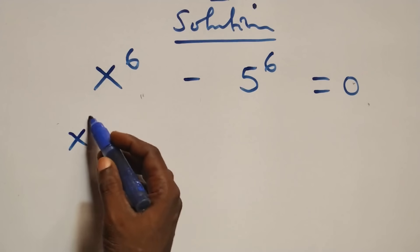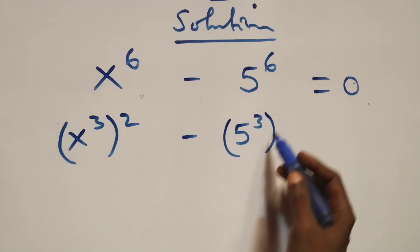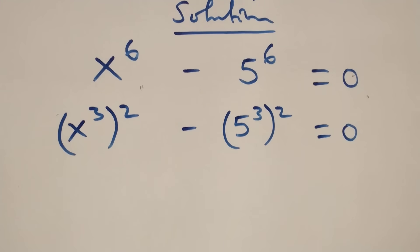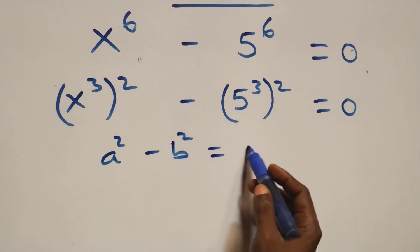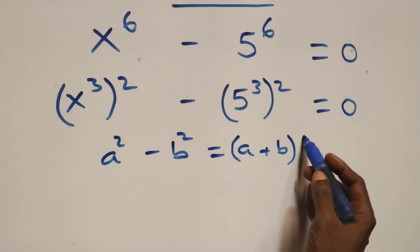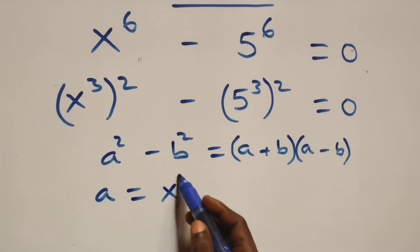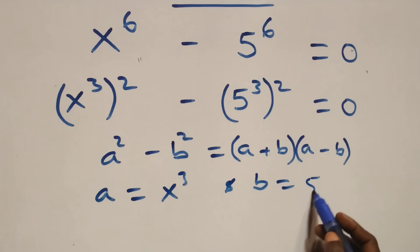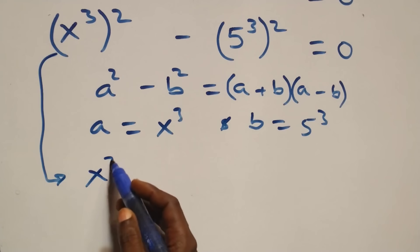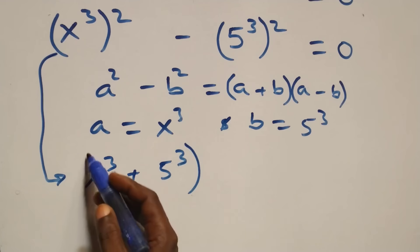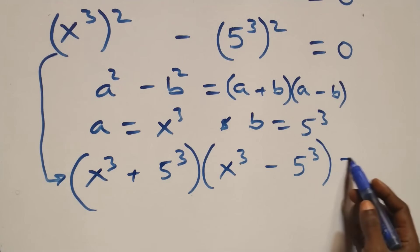We can write this as x raised to the power 3 squared minus 5 raised to the power 3 squared equals to 0. This follows the identity a squared minus b squared, which factors as a plus b into brackets times a minus b, where a is x raised to the power 3 and b is 5 raised to the power 3. So this becomes x raised to the power 3 plus 5 raised to the power 3, times x raised to the power 3 minus 5 raised to the power 3, equals to 0.